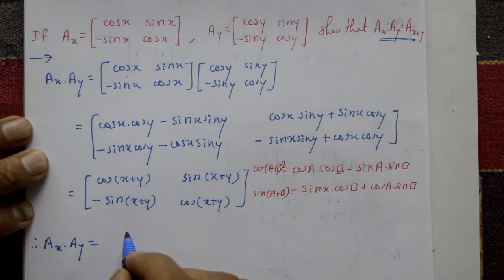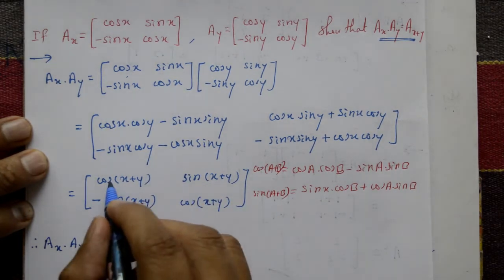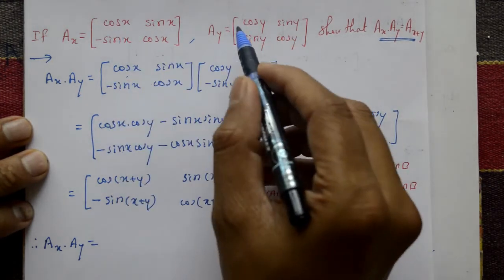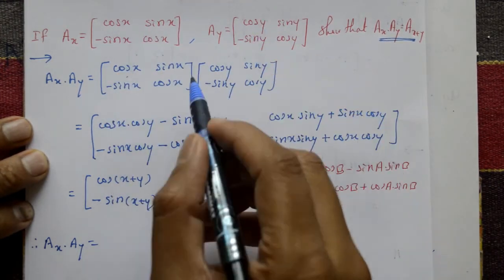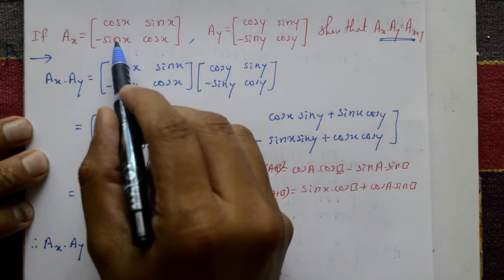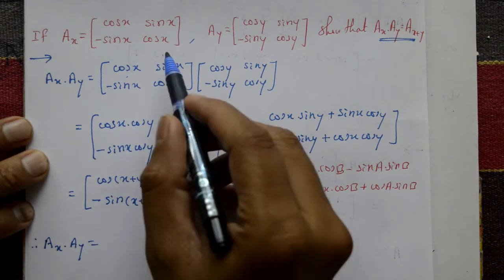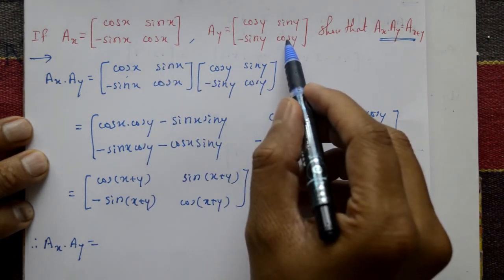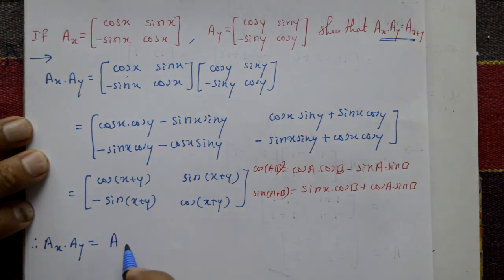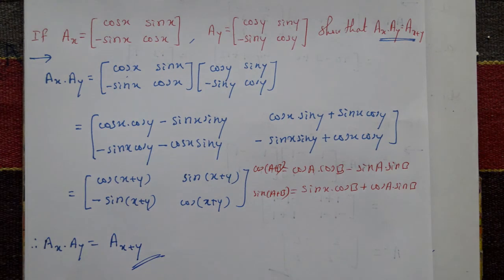Therefore A(x) into A(y) is equal to the matrix with first element cos(x+y), second element sin(x+y), second row first element minus sin(x+y), and second element cos(x+y), which is exactly A(x plus y). This is the required solution. If you like this video, please subscribe to my channel and comment.